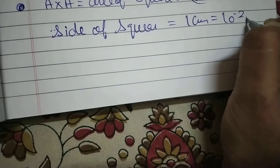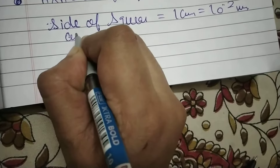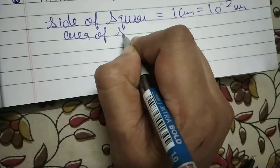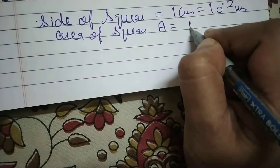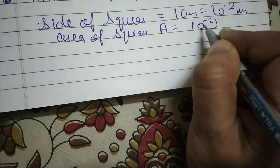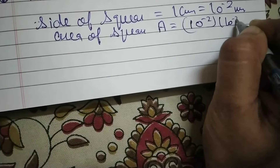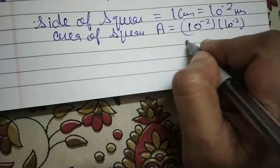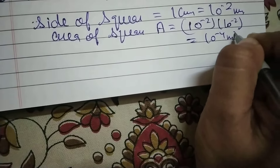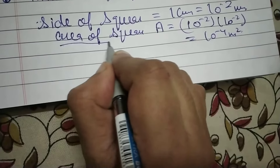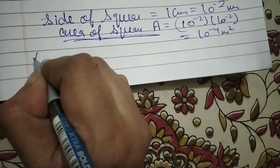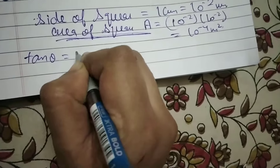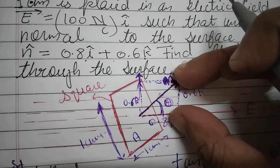The side of the square is 1 cm, which is 10 to the power minus 2 meters. So the area of the square — which I am calling A — is side times side: 10⁻² × 10⁻² = 10⁻⁴ meter squared. This is the area of the square.